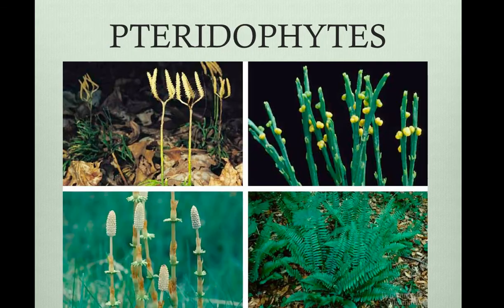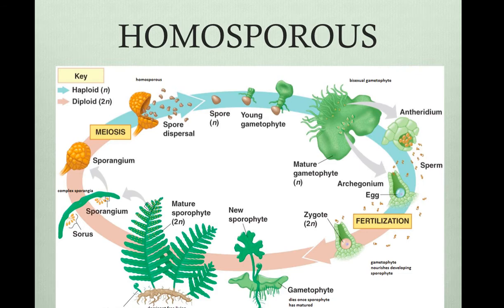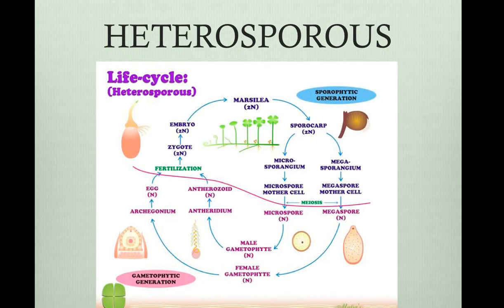Pteridophytes are seedless vascular plants. There are two phyla: the Lycophyta and the Pterophyta. The lycophytes have small leaves with a single, unbranched vein. Those small leaves are called microphylls. They evolved from tissue flaps on the surface of stems. Larger leaves in other plants are called megaphylls. Most ferns are homosporous plants, meaning the sporophyte produces a single type of spore which develops into the bisexual gametophyte. Water ferns are examples of heterosporous plants. They produce megaspores, which develop into the female gametophyte, and microspores, which develop into the male gametophyte.